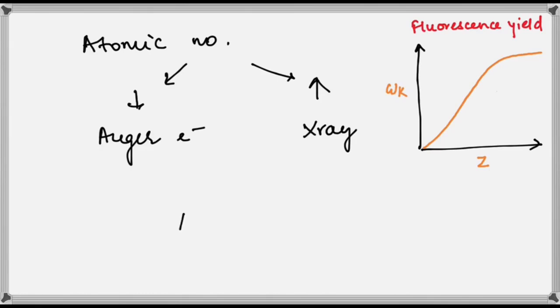Remember that the Auger electron is different from the internal conversion electron, which will be discussed in a subsequent video.